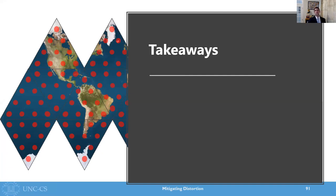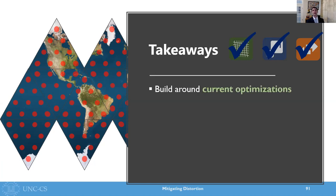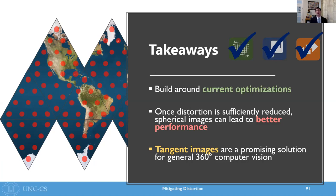So before we wrap up, let's look at the takeaways from tangent images. Tangent images sufficiently address distortion because they're derived from the icosahedron. The big reason tangent images achieve both scalability and transferability is because we design them around current optimizations. 2D convolution has become so ubiquitous that it's being physically embedded in chips — we shouldn't fight this progress. Instead, let's find a way to make it work for the problems we want to solve. Additionally, I've shown that once we get the distortion issue out of the way, we're actually able to tap into improved performance with the ultra-wide field of view that 360 provides. And finally, tangent images are a promising general solution to the spherical image problem — they're actually the first contribution in this area of the field that can be leveraged for both new advances in deep learning and improvements for traditional vision problems as well.